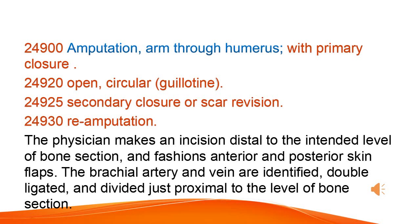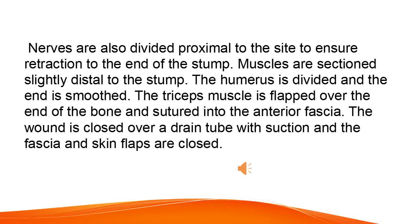The physician makes an incision distal to the intended level of bone section and fashions anterior and posterior skin flaps. The brachial artery and vein are identified, double-ligated, and divided just proximal to the level of bone section. Nerves are also divided proximal to the site to ensure retraction to the end of the stump.